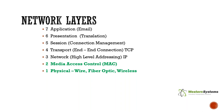Layer four establishes the type of connection between two machines: TCP is a hard connection that asks for verification of receipts, while UDP is a soft connection that sends and forgets — it doesn't need a receipt. Layer five manages the connection — when to terminate or restart it. Layer six translates data between two applications if necessary. Layer seven is the application using the data being transferred, such as an email program or file transfer program. We'll focus on layers one and two.